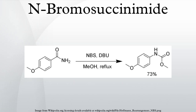N-bromosuccinimide, or NBS, is a chemical reagent used in radical substitution and electrophilic addition reactions in organic chemistry. NBS can be a convenient source of the bromine radical.